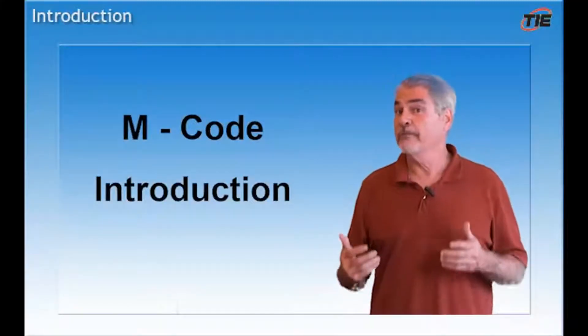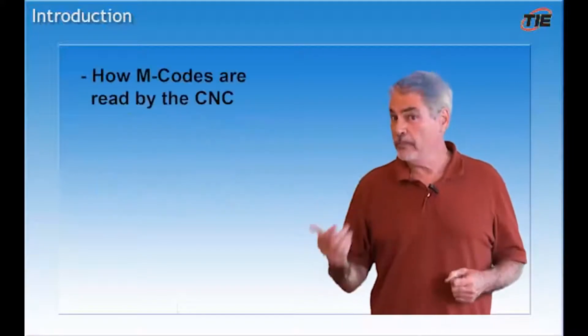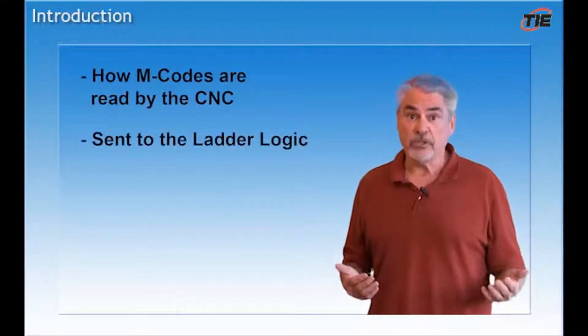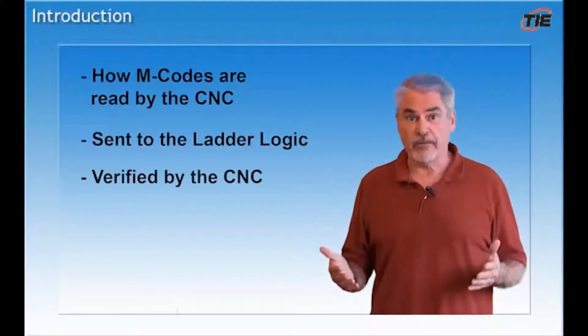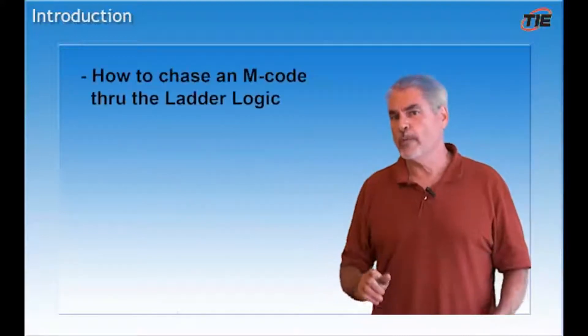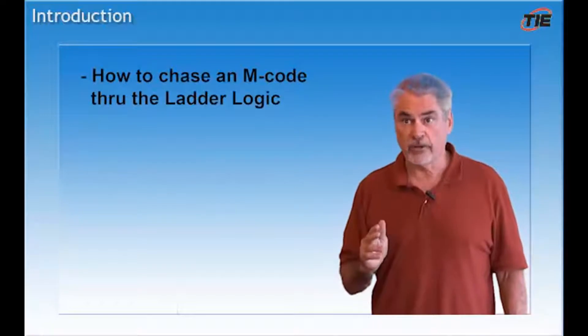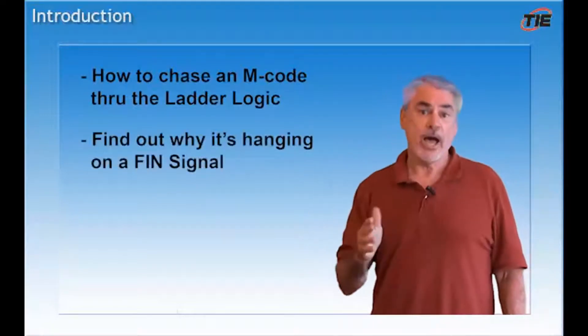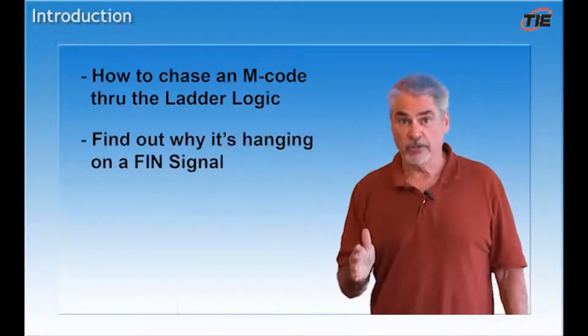This level one lab will cover M codes, how they're read by the CNC, sent to the ladder logic, and then verified by the control. At the end of this lab, you should know how to go about chasing an M code through the ladder logic and finding out why it's hanging on a FIN signal.